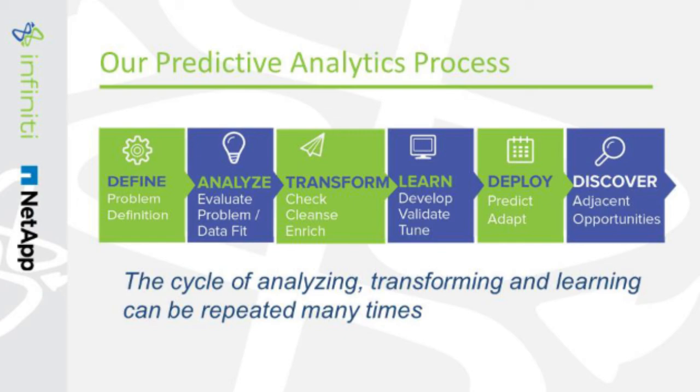We have a predictive analytics process that would perhaps be better shown as a circle, because it's circular in how you go about following it. The first thing is trying to define your problem — what is it you're trying to understand. Then moving into an analysis mode, looking for the data you're going to use to evaluate and define the problem. From there you move into checking and cleansing the data. Sometimes you may realize you don't even have the data you need. So there's a whole process of understanding what data you have and whether it's clean. Then you move into validating and fine-tuning the data, which leads to a set of predictions and findings. From that, you move back into discovery mode — that's what I meant by a circular process.